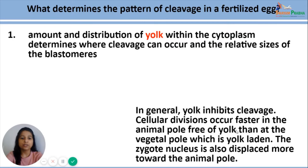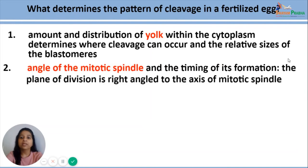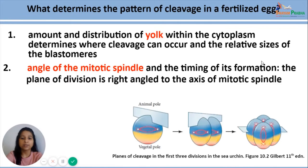The second important factor is the angle of the mitotic spindle and timing of its formation during cleavage. The plane of division is generally formed at right angles to the axis of the mitotic spindle. As we can see in the diagram showing the planes of cleavage in the first three divisions in the sea urchin, when the mitotic spindle is horizontal the cleavage plane is vertical, and when the angle of mitotic spindle is vertical the cleavage plane is horizontal.